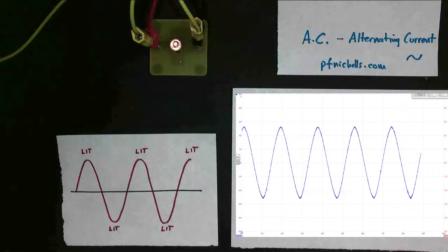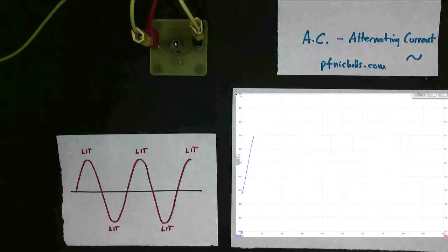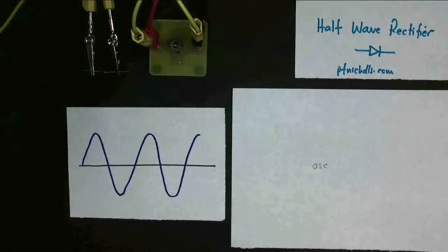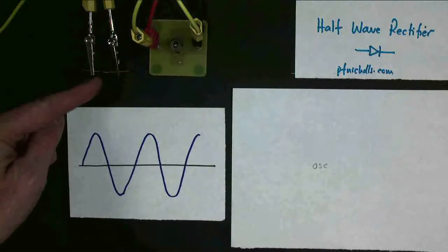Now we're going to see if we can convert our AC into DC. To convert our AC into DC, we need to use a component that only allows current to flow in one direction. This is called a diode.